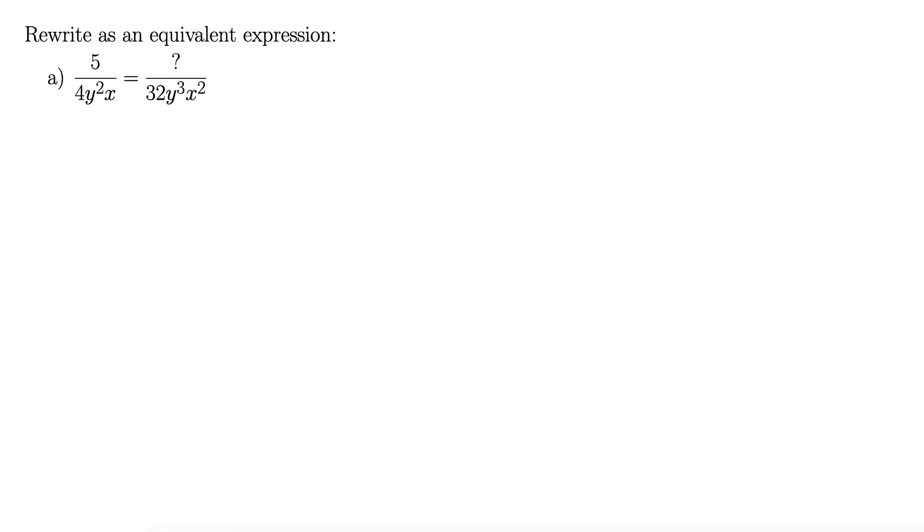We want to rewrite this as an equivalent expression. They give us 5 over 4y squared x and we want to write that as something over 32y cubed x squared.